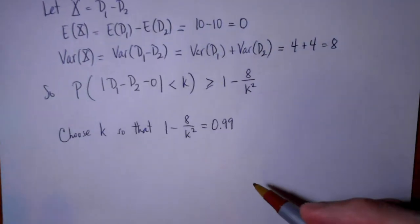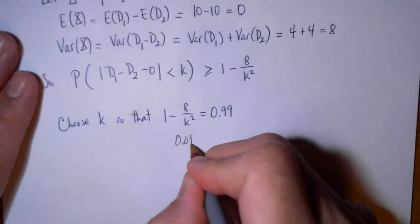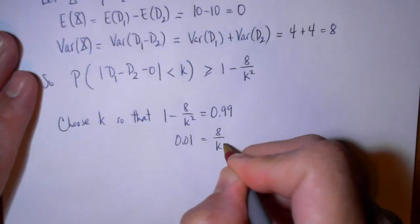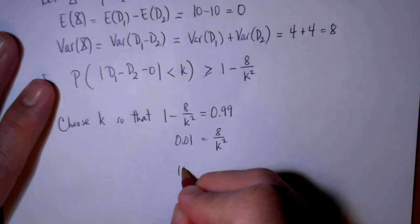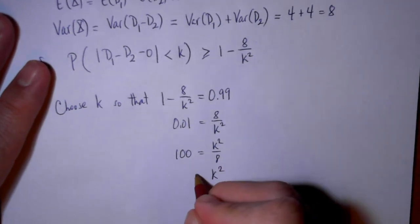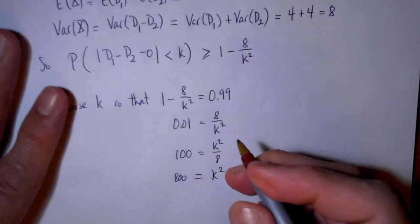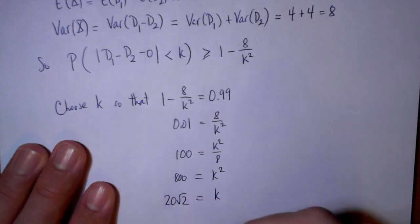Okay, so now this is just simply algebra. So we have 0.01 is equal to 8 over k squared. So let's see, so that gives us, take the reciprocal of both sides, 100 is equal to k squared over 8. So that k squared is equal to 800. And so k would therefore be equal to 20 square root of 2.